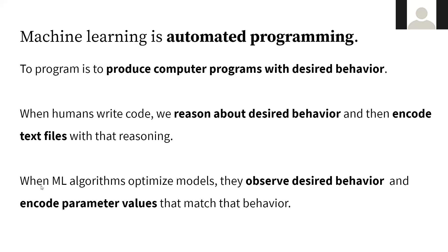The view that makes the most sense for thinking about machine learning is that machine learning is automated programming. When we program, we produce computer programs that have some desired behavior. When humans do it, they write code — they reason about the desired behavior and encode text files with that reasoning. When machine learning algorithms optimize models, they observe desired behavior and then encode parameter values to match that behavior.